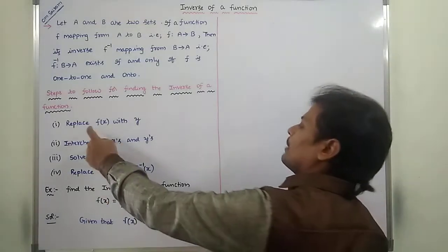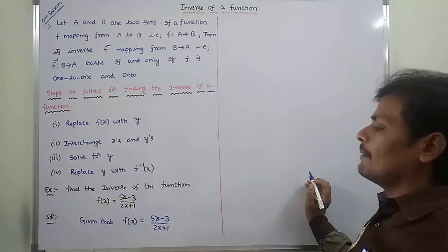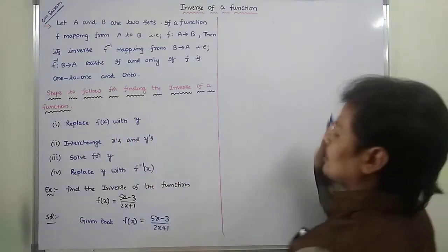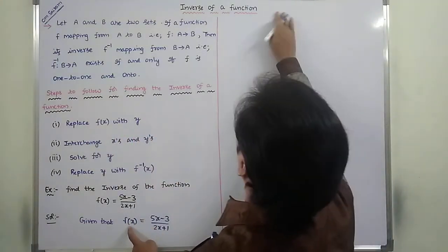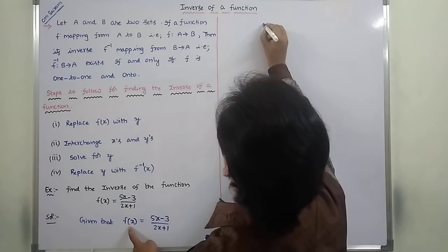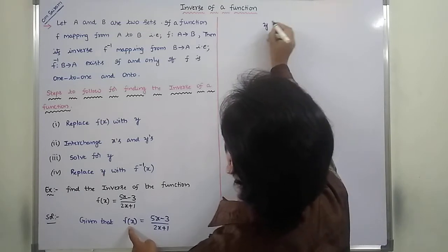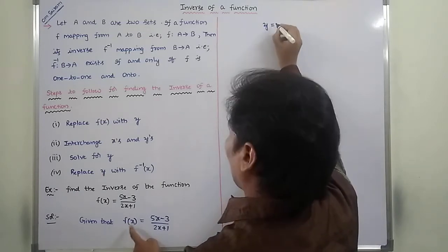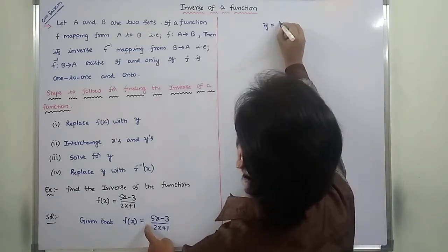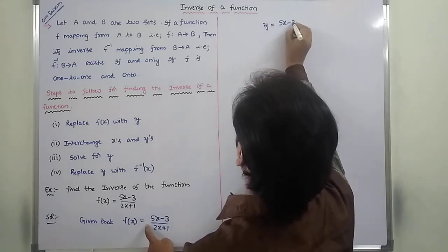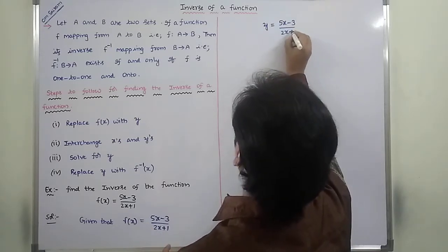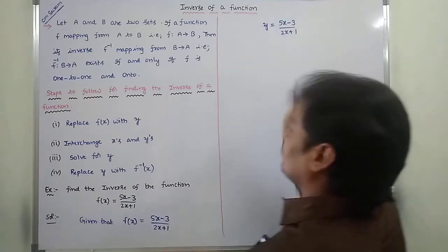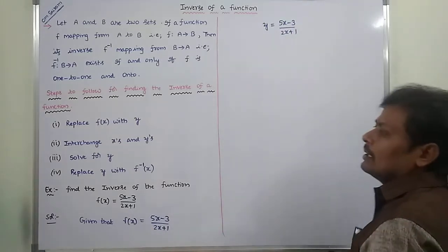First step: replace f of x with y. So now f of x can be replaced by y. y is equal to 5x minus 3 divided by 2x plus 1.